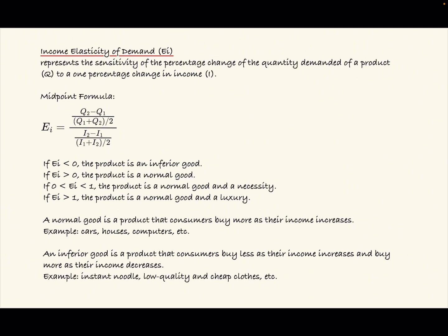Now if EI is less than zero, the product is an inferior good. If EI is greater than zero, the product is a normal good.